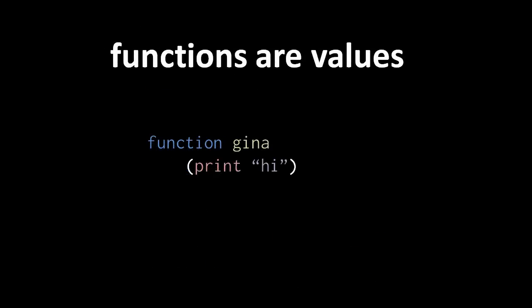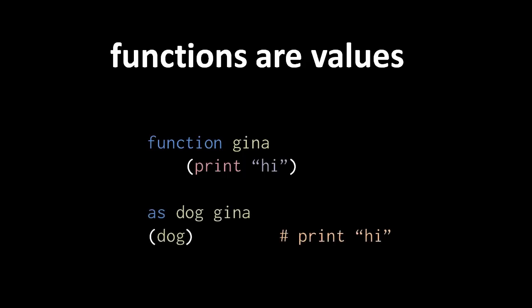In Pidgin, and in many languages, functions are actually a type of value. This means we can assign them to variables and can pass them as arguments. Say I have the function gina — I can assign gina to a variable dog, and then invoke dog as a function. It's the same as invoking gina, because at the time of this call, the variable dog references the function gina.